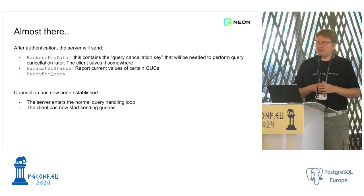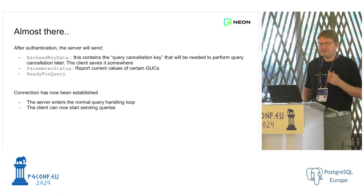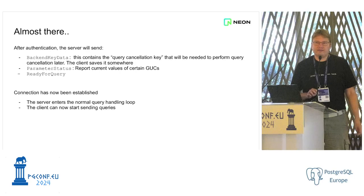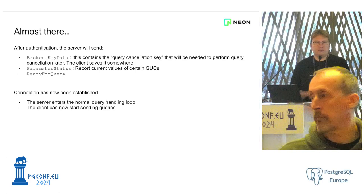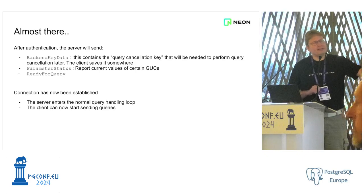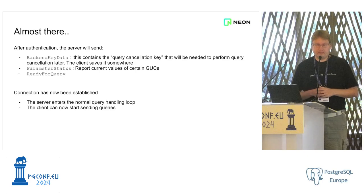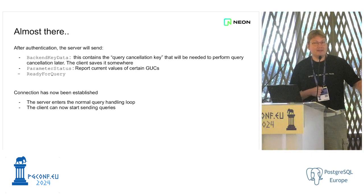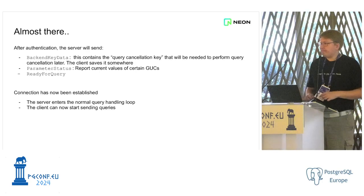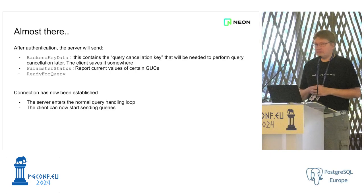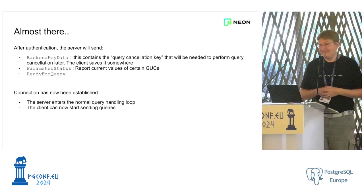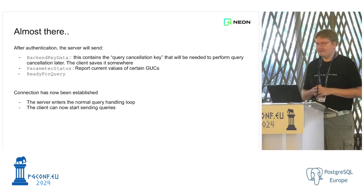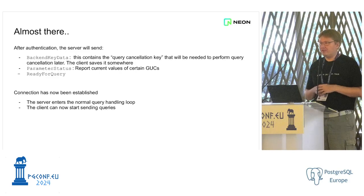Any questions on this part? The server does send one of these parameter status messages for the server version as well, so the client doesn't know which version it's speaking to until after authentication — that's one interesting tidbit. What is a good tool besides Wireshark to watch what's going on? Wireshark is a very good tool. LipDQ has a tracing option too.